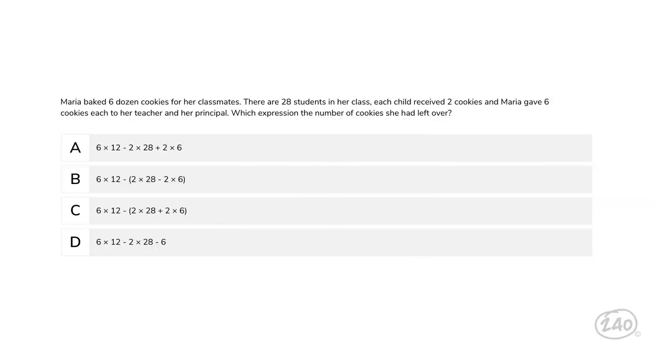Maria baked six dozen cookies for her classmates. There are 28 students in her class. Each child received two cookies, and Maria gave six cookies each to her teacher and her principal. Which expression expresses the number of cookies she had left over? Let's figure out how many cookies Maria started with first. She baked six dozen, so six times twelve. Next, we need to take away all of the cookies she gave out, so we need grouping symbols.